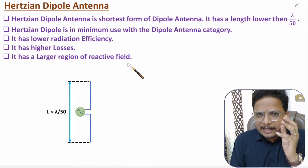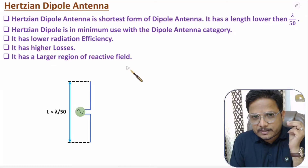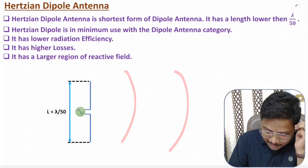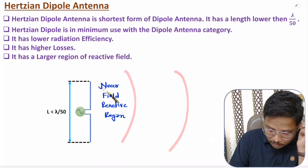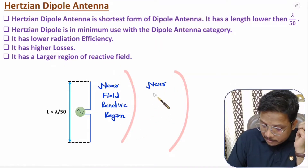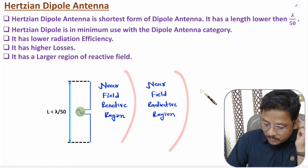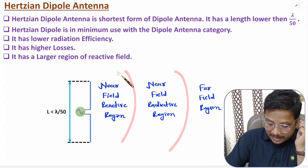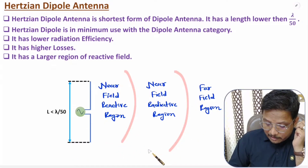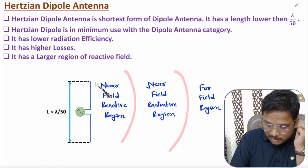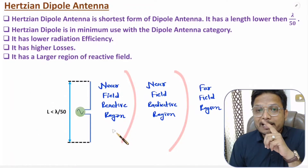With any antenna, we have three different categories of radiation regions. The nearest one is the near-field reactive region — closer to the antenna. After that, we have the near-field radiative region. And the farthest one is the far-field region. In the near-field reactive region, we don't have electromagnetic waves.